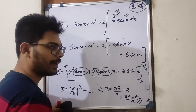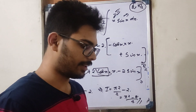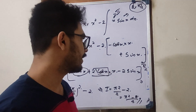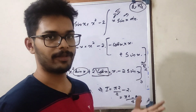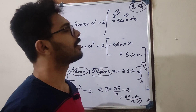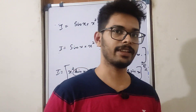That is pi squared minus 8 divided by 4. This is the answer. Now if you want to share it with us, I will do this for you.